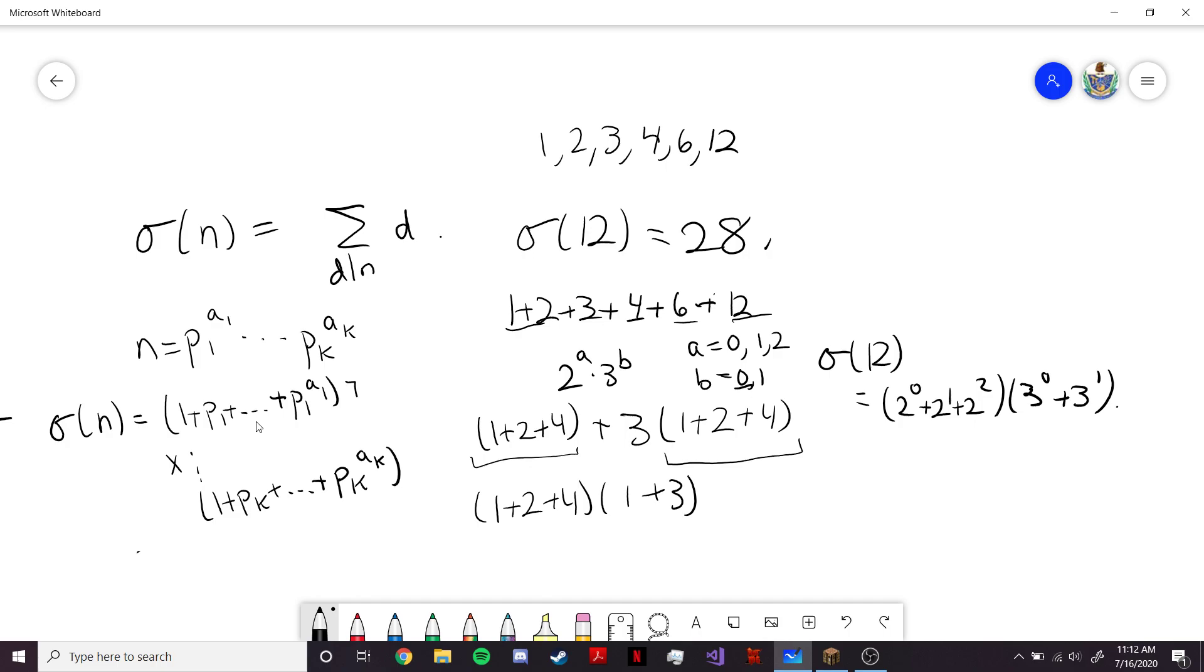And once again, since each of these factors corresponds to a single prime, we can see that sigma is going to be multiplicative, because if I multiply sigma, or if I do sigma of x, y, where x and y are coprime, then none of their primes will be the same, and so these factors will multiply uniquely.